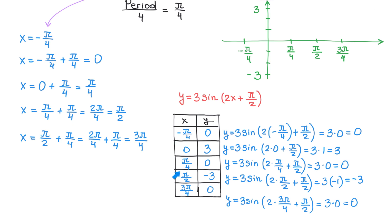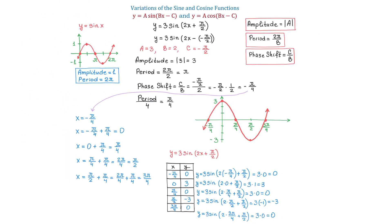Now what is left is to plot all these points and connect them to get the graph. The five points are: (negative pi over 4, 0), (0, 3), (pi over 4, 0), (pi over 2, negative 3), and (3 pi over 4, 0). Now let's connect them. Here we have the graph of the function y equals 3 sin of 2x plus pi over 2. I hope you learned a lot. Please leave a comment and thank you for watching.